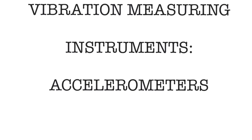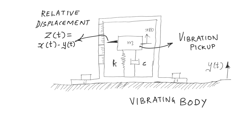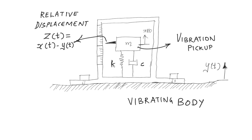In this video I will be talking about accelerometers, which is an example of a vibration measuring instrument. In the first video we established how a typical vibration measuring instrument looks and what the different components inside it are. This is the schematic I used in the previous video. This particular case, which houses the seismic mass, spring, and damper, is connected to the vibrating body.